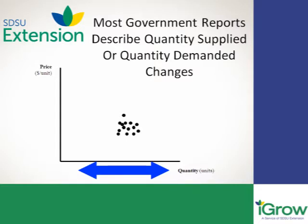Now let's come back to the original subject, having had that quick review on supply and demand. One of the ways we try to figure out where these price-quantity points are is through the information provided in government reports. There are a variety of industry reports out there, but I'm concentrating on government ones because they tend to be the most widely used, read, and well-respected. The information we see in these reports mostly gives us information about quantity — whether we're looking at higher or lower quantities over a particular growing season. With that information and historical relationships, we then go back to trying to plot out where those supply and demand curves might be.